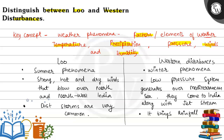Direct exposure to Loo can be fatal. Western Disturbances, on the other hand, can be beneficial — they bring rainfall which is good for the Rabi crop in India, so they play a big role and are quite beneficial.